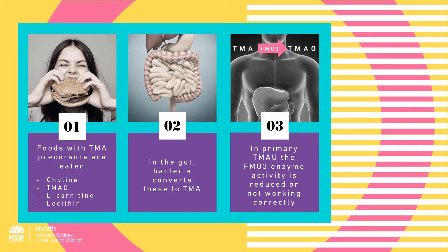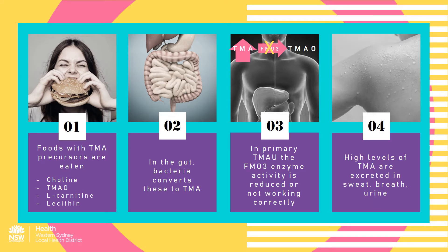However, in primary TMAU, which is an inherited condition, the FMO3 enzyme is deficient or faulty. As a result, a buildup of TMA occurs, and high levels of the odorous TMA are then excreted in the sweat, breath and urine. A secondary form of TMAU may result from a very high intake of TMAO precursors that overload the enzyme, most commonly high doses of carnitine or choline used to treat other medical conditions, or from bacterial overgrowth resulting in increased production of TMA. Secondary TMAU does not have a genetic cause.